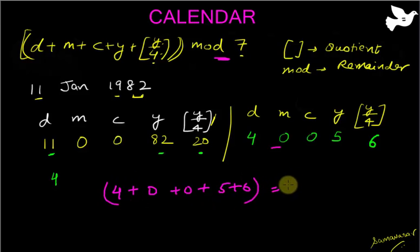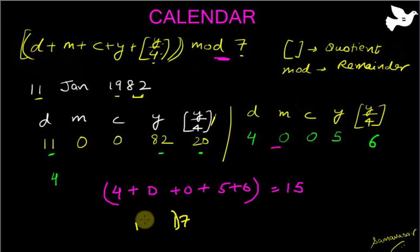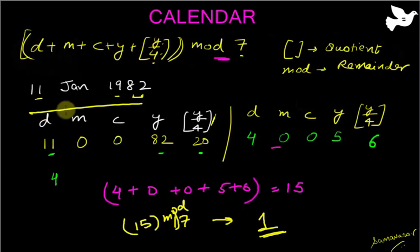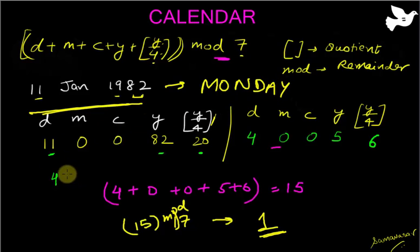Plugging into the formula: 4 plus 0 plus 0 plus 5 plus 6 — the sum is 15. Because 15 is greater than 7, I take the modulus again. 15 mod 7 gives a remainder of 1. From the table, 1 means Monday — so 11 January 1982 was a Monday. This makes the basic method very clear.